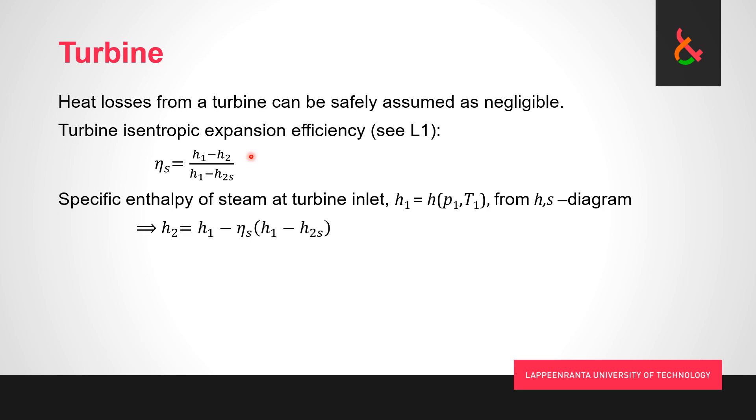In solving that, we apply the definition of the isentropic efficiency. The definition of the efficiency is that η_t equals (h_1 - h_2) divided by (h_1 - h_2s). That is the enthalpy difference, how much in kilojoules per kilogram we get energy from steam into the turbine rotor.